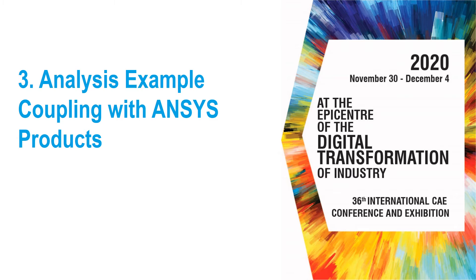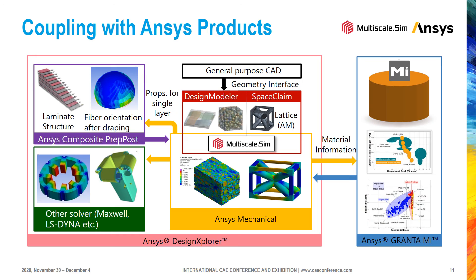Let's move on to the analysis examples using multiscale.sim. We have many analysis examples conducted in Japan, but today I will show you some use cases focused on collaboration with ANSYS products. Analysis using multiscale.sim is mainly performed on the ANSYS Mechanical GUI and Design Modeler or SpaceClaim for creating microstructure. Homogenization analysis is focused on a very limited region to obtain equivalent material constants of composite. It is effective to collaborate with ANSYS Composite PrepPost when you want to know the material property for laminated structure.